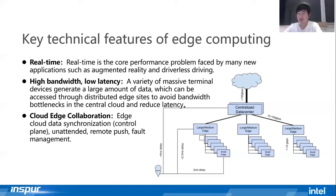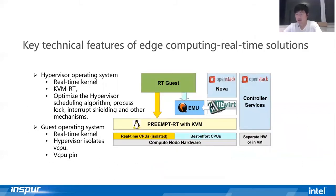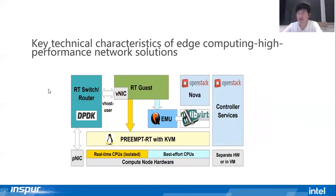Next, let's talk about the current common solutions that meet the key technical characteristics of the data plane in real-time, high bandwidth, and low latency. For real-time, solutions mainly rely on Linux real-time patches, which are used to optimize hypervisor scheduling, process priorities, and interrupt handling. For network optimization, we have identified DPDK, SR-IOV, and smart network cards as main solutions.